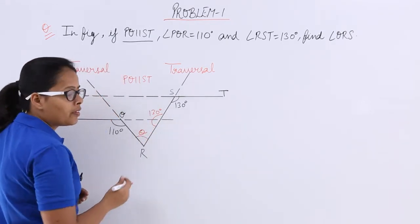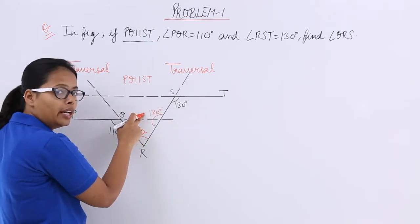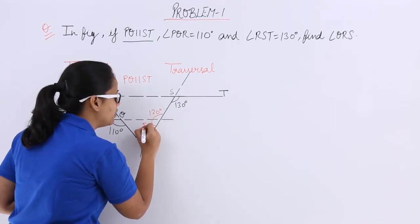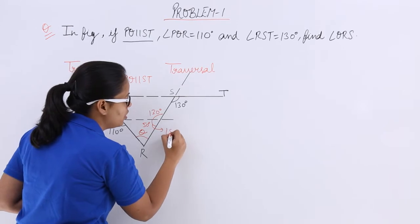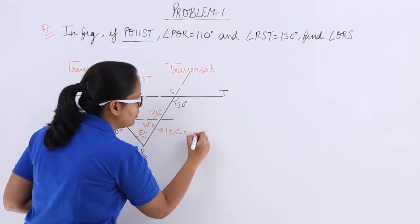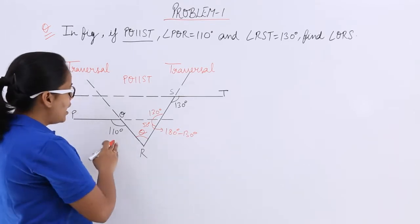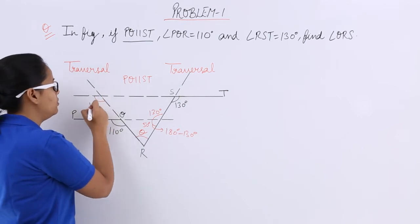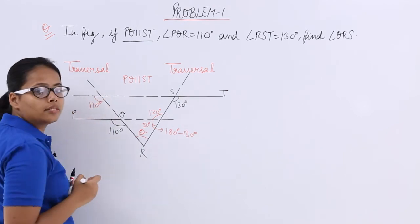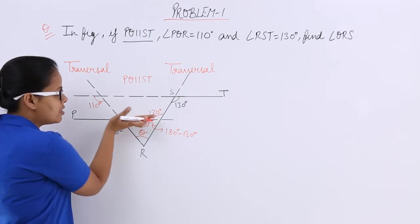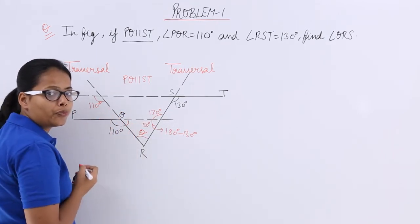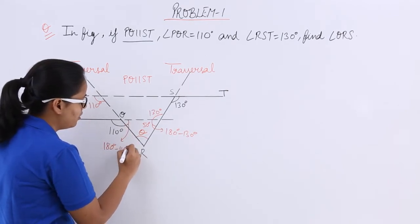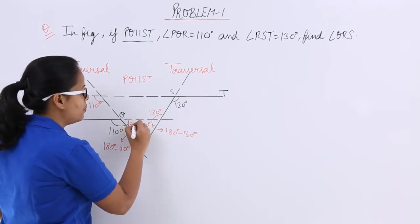So what will this angle be? As this is a straight angle, if this is 130 degree, so this will be 180 minus 130, which gives 50 degrees. And if this is 110, so this angle will be 180 minus 110. On subtraction you will be getting 70 degrees.